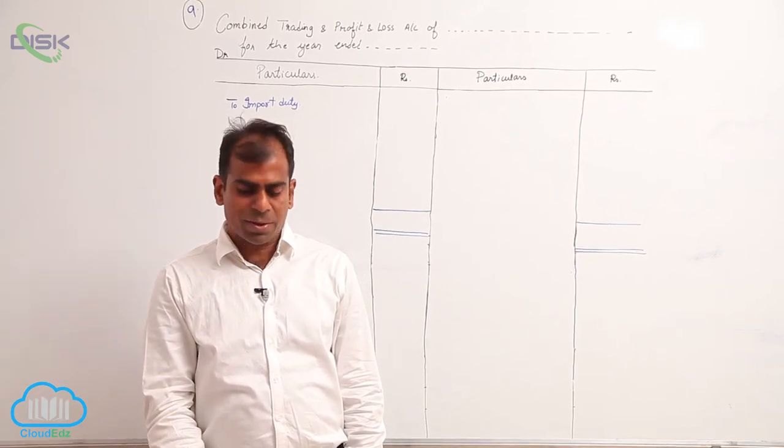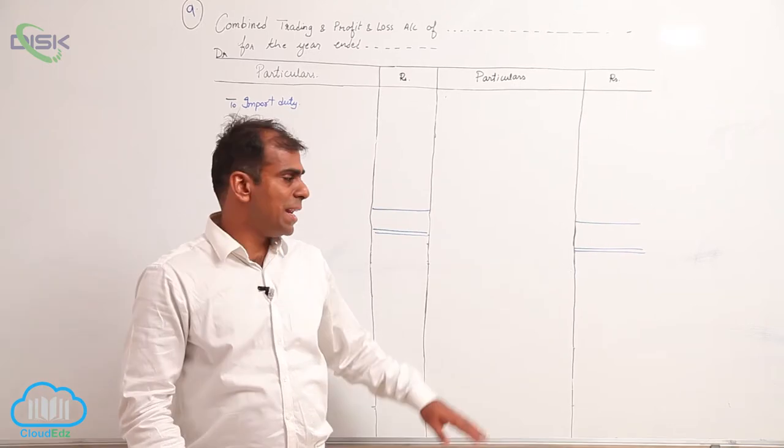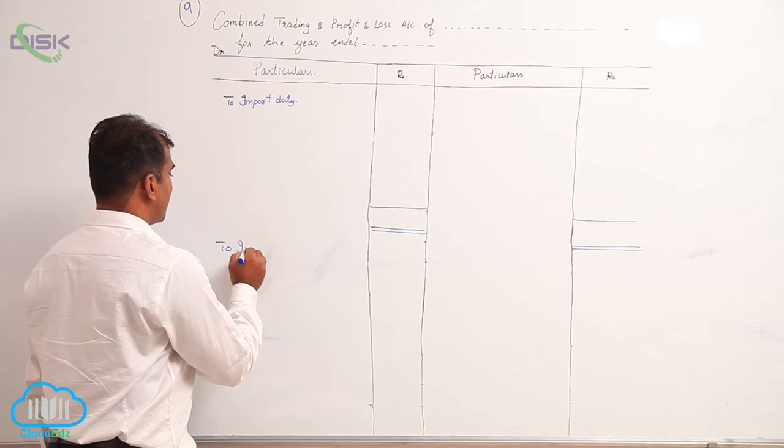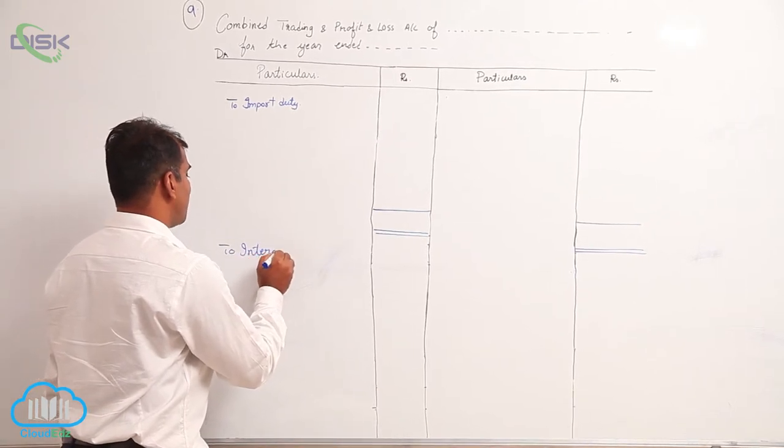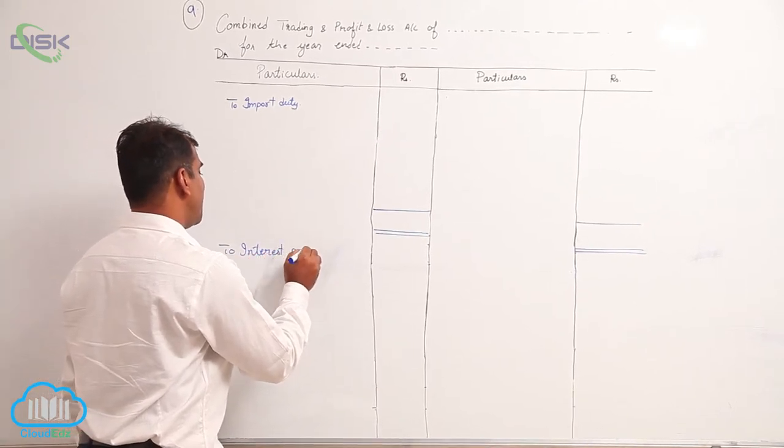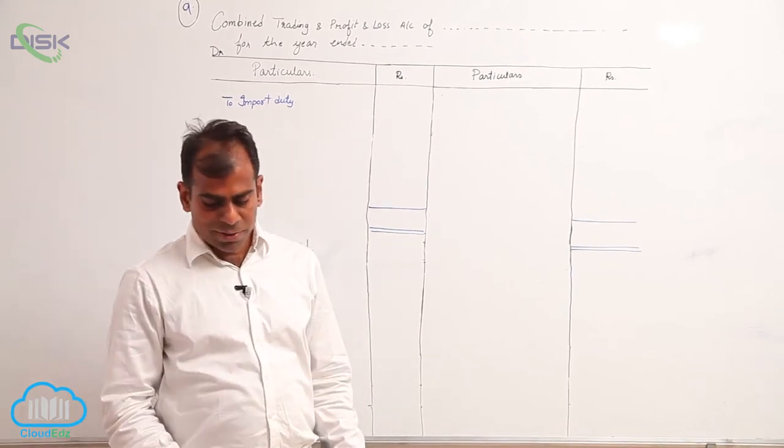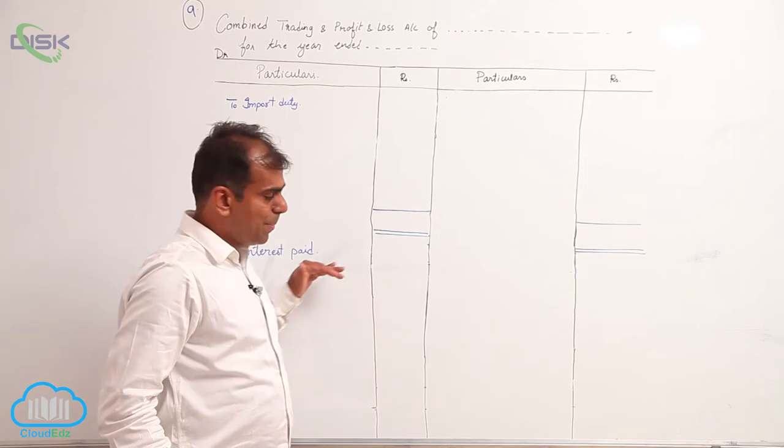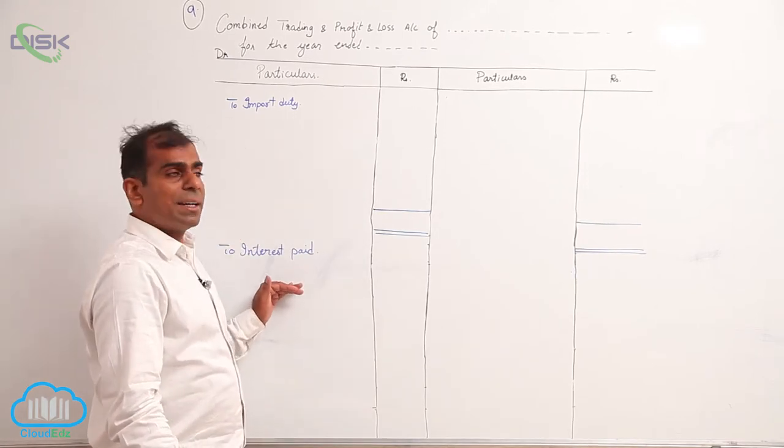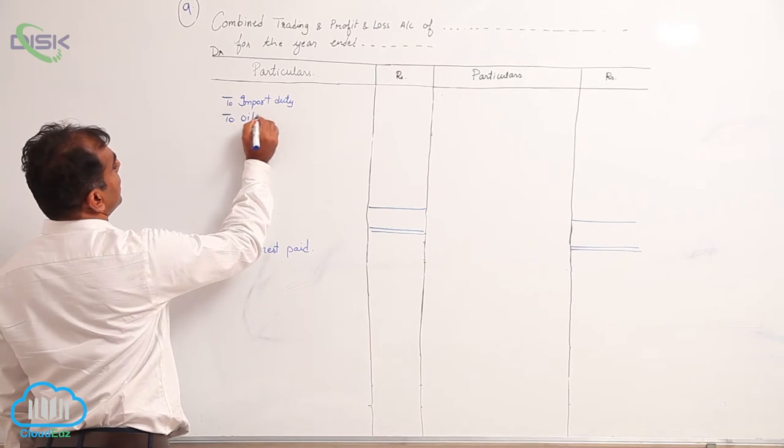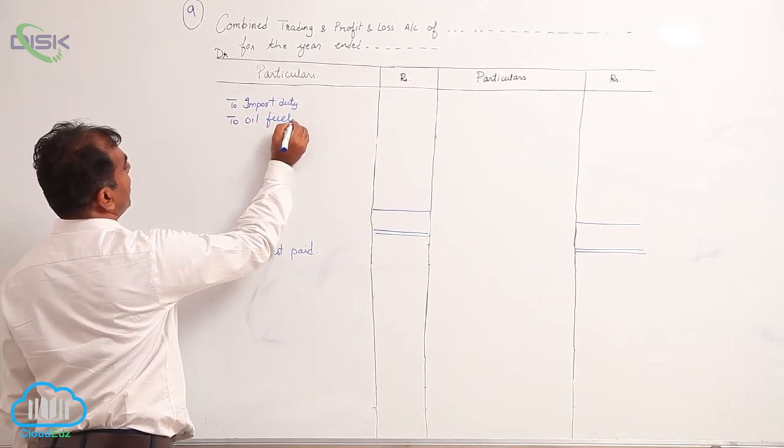Interest paid will appear in P&L account. If you have not come across this, interest paid will always come in P&L debit. Next, you have your trade expenses - they'll appear in P&L account. Oil and fuel will appear in trading account.